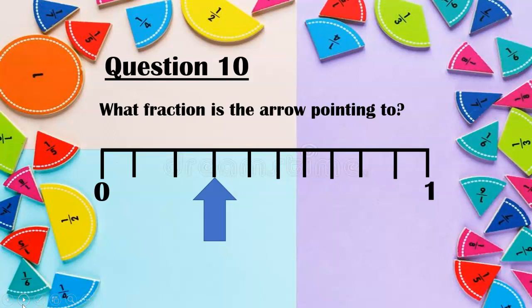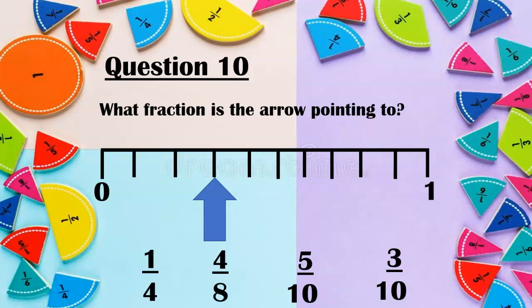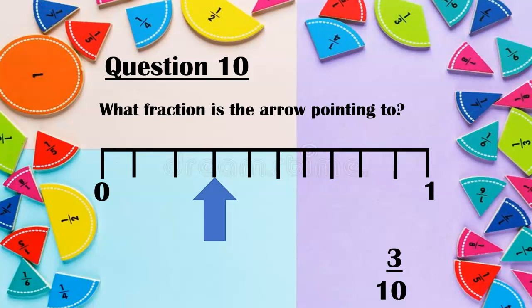Our final question — question ten. What fraction is the arrow pointing to now? One quarter? Four eighths? Five tenths? Or three tenths? Look at how many sections we have and how many we are along. It's not a quarter, not four eighths. Well done if you said three tenths. We had ten sections along all the way to one whole and we went three along, so three tenths.